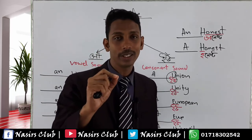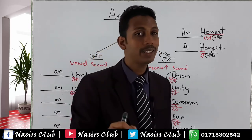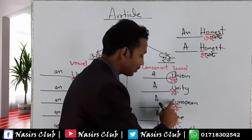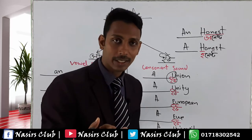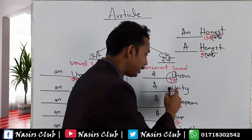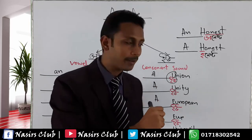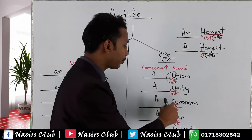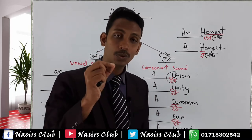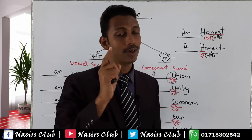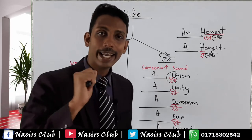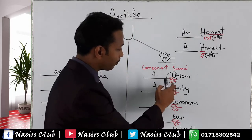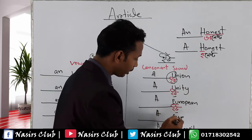We need to know the IPA — the sound. This is the 'yu' sound. The word 'University' also starts with the 'yu' sound — that is a consonant sound. So we say 'a University', because the sound is 'yu', which is a consonant sound. That is why we use 'a', not 'an', before 'University'.